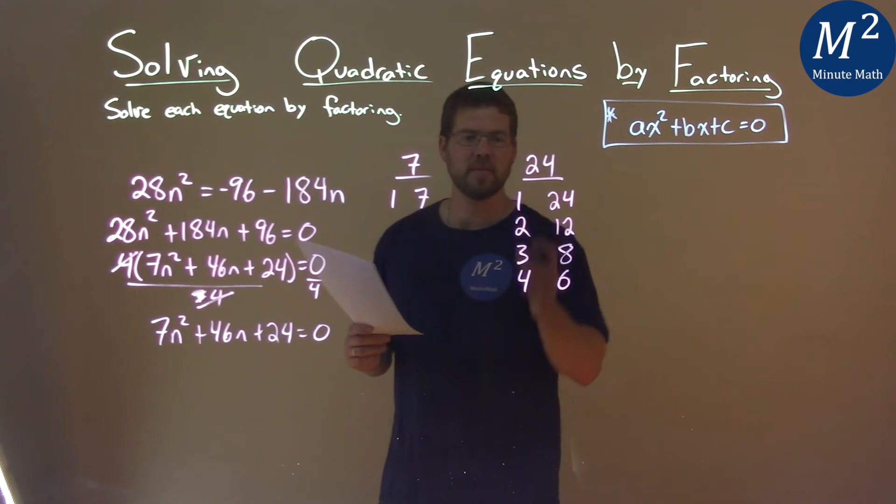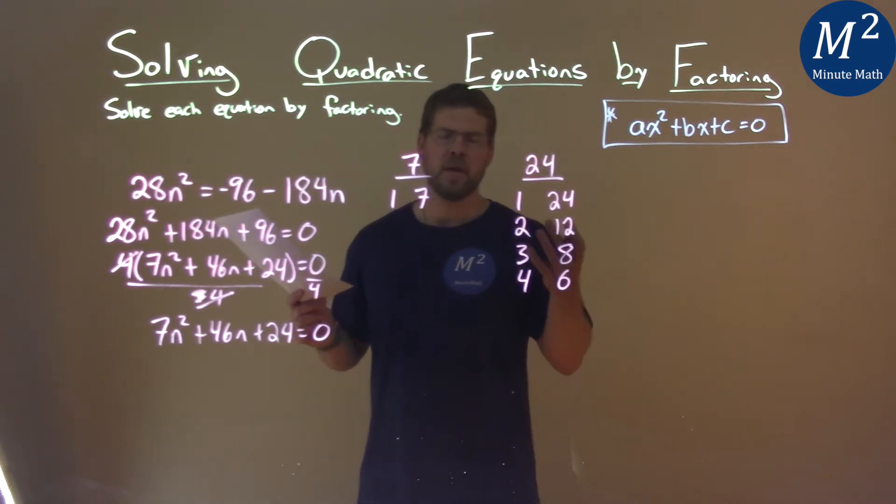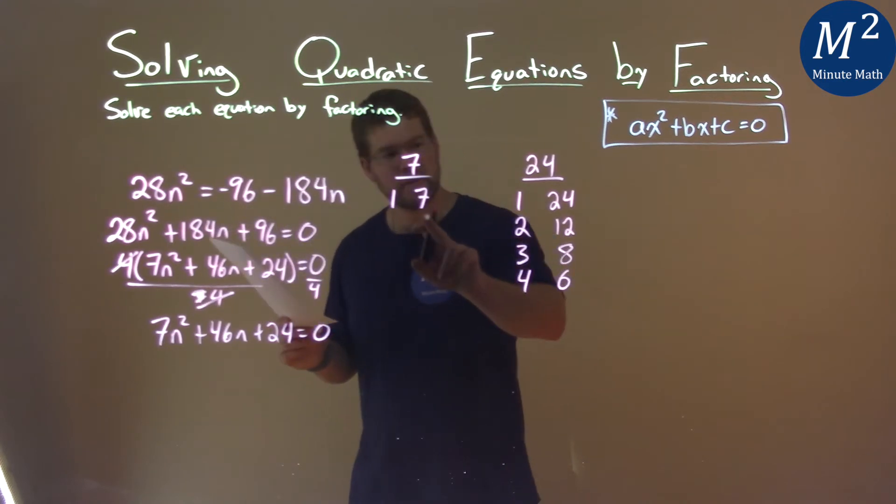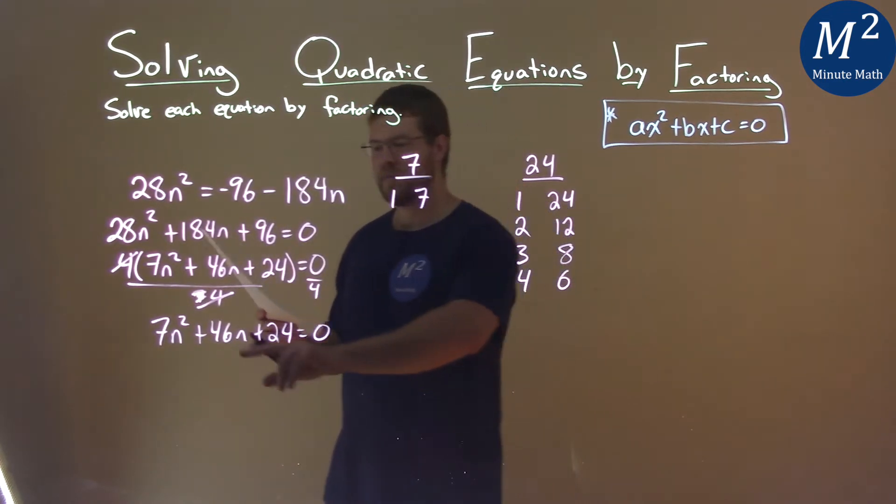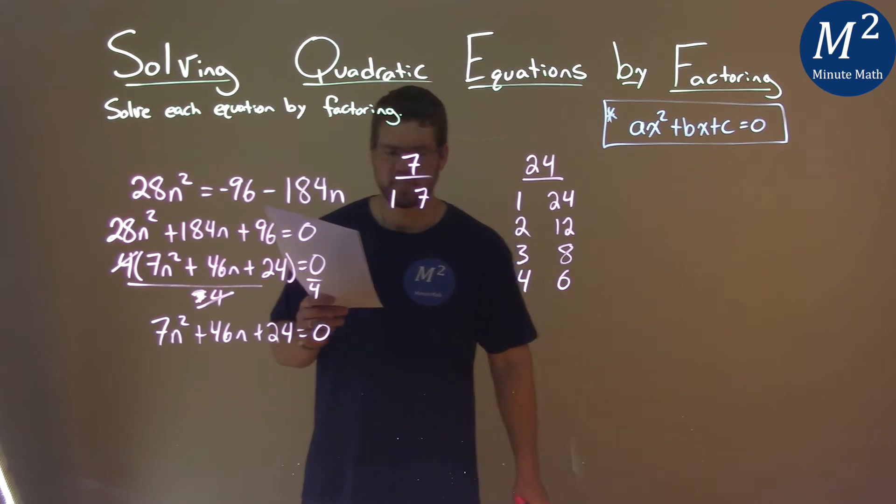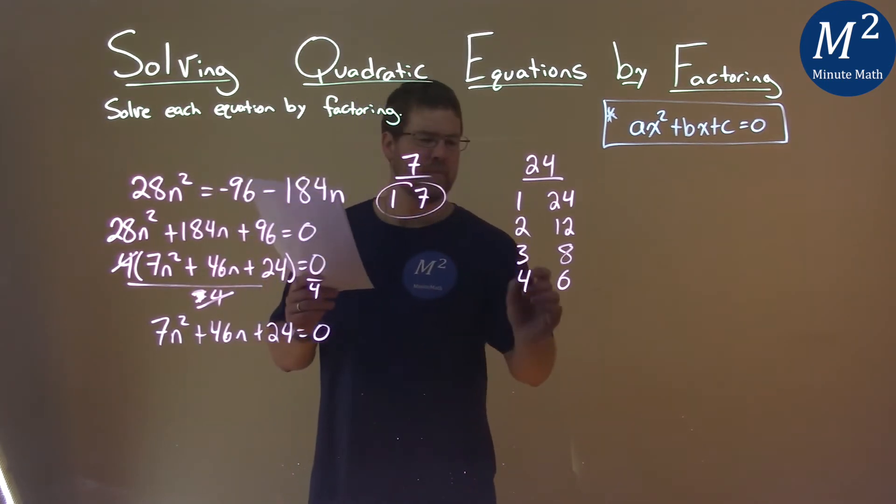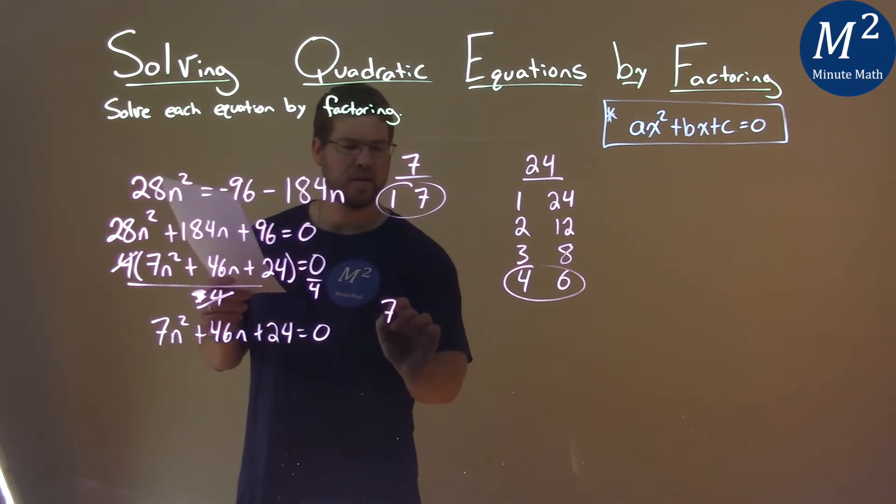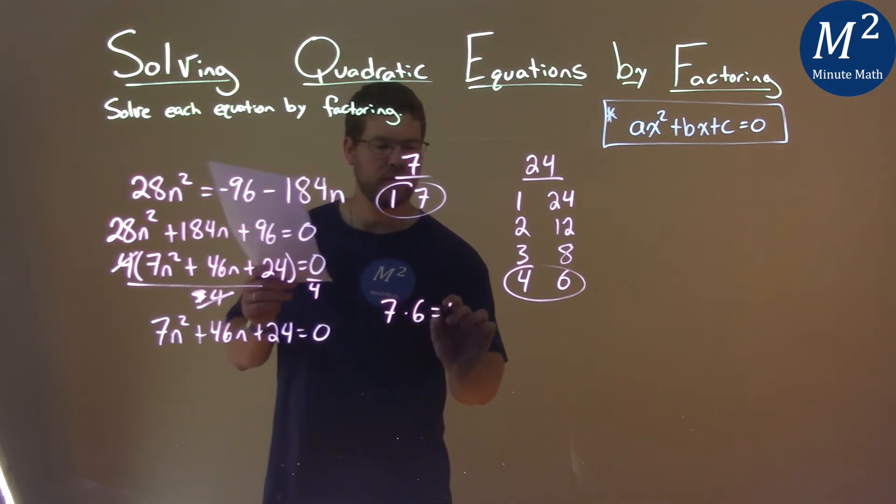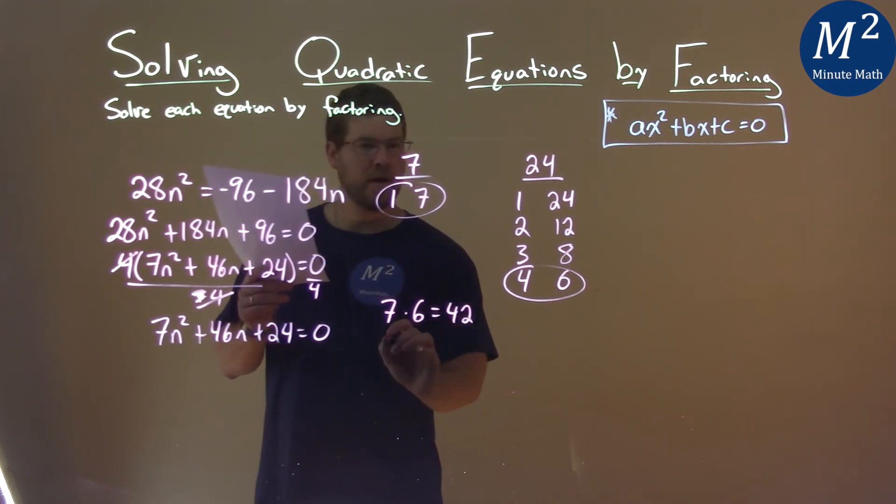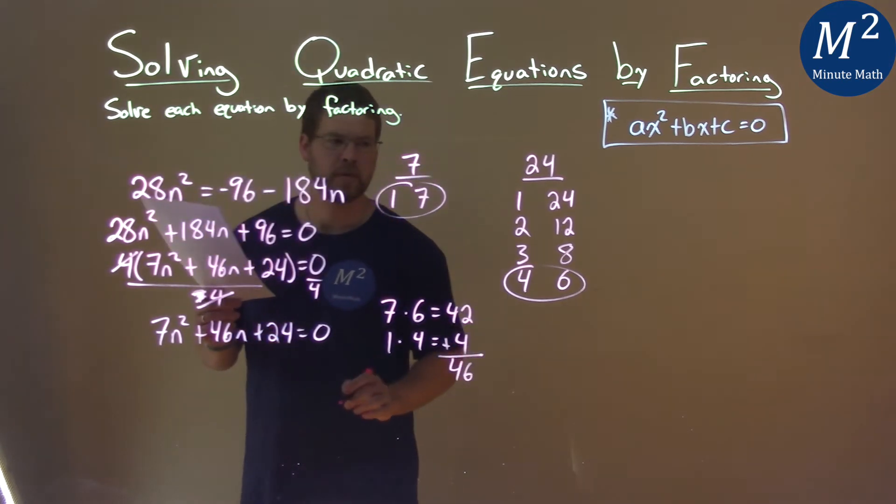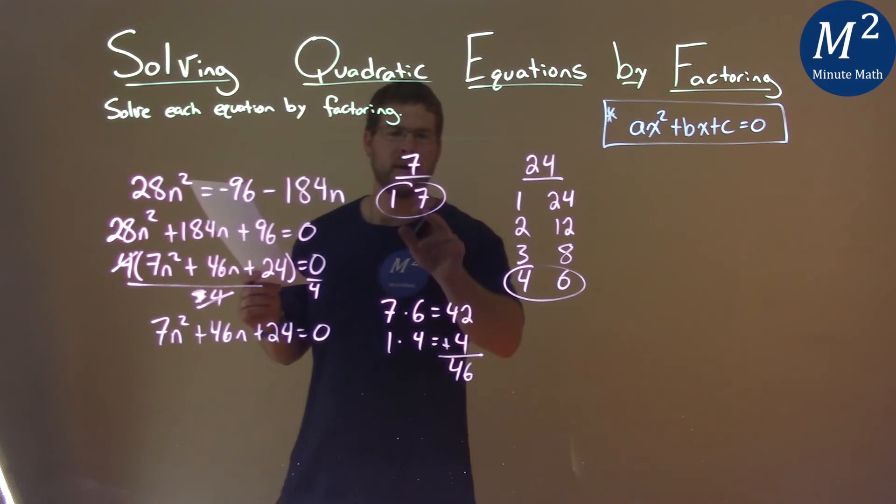All right, so we have all these multiples, so now what? Well, I have to ask myself, one times which number plus seven times the other number gets us 46. And the pair has to be one and seven, but the second pair is the four and the six. So seven times six is 42. One times four is equal to four. Add them together, I get 46.